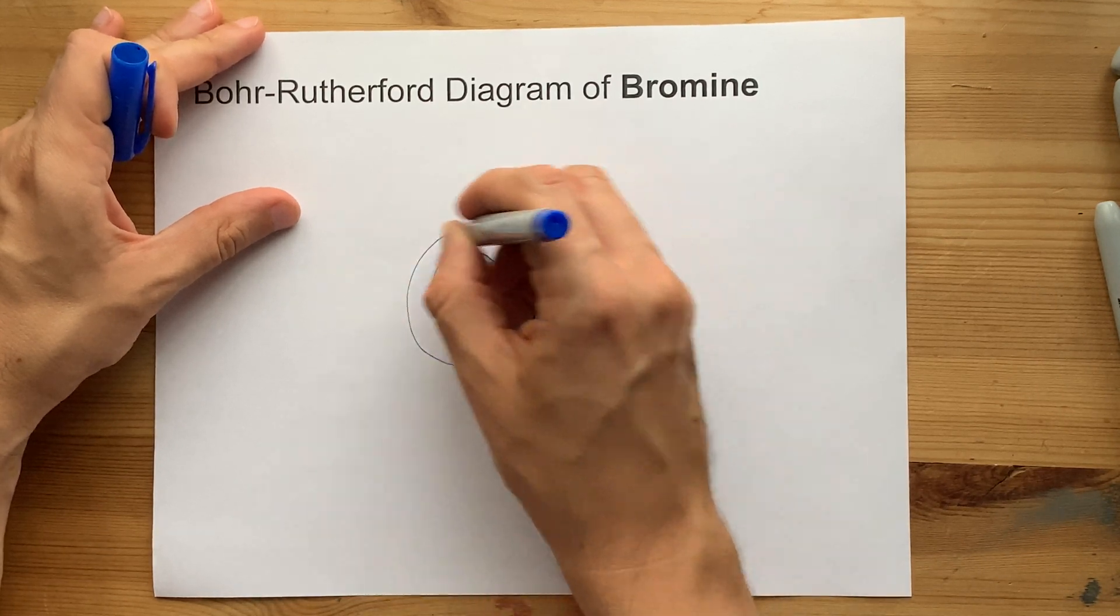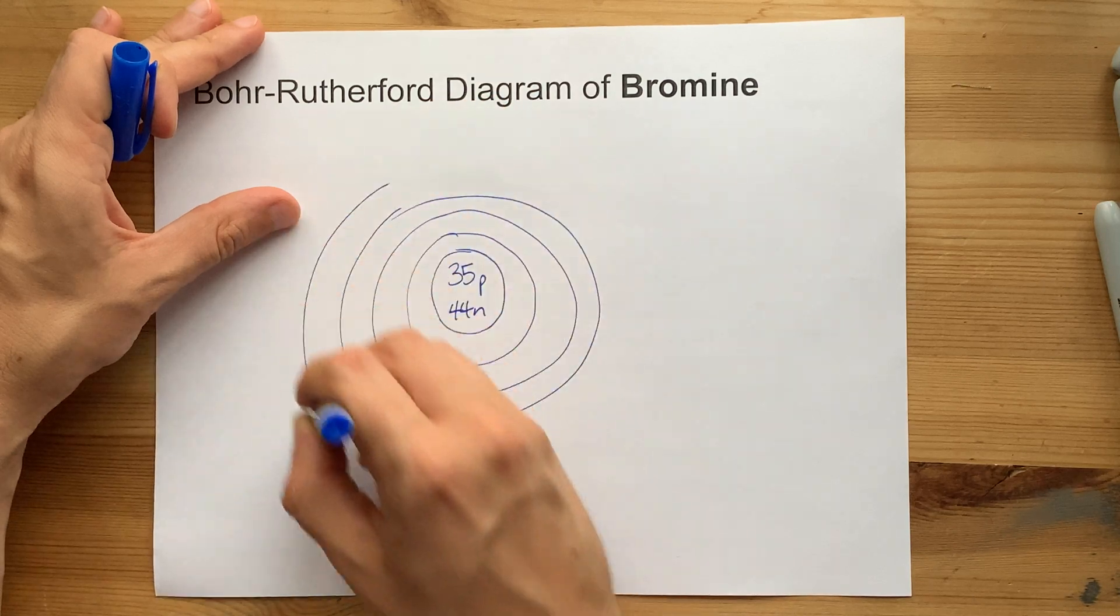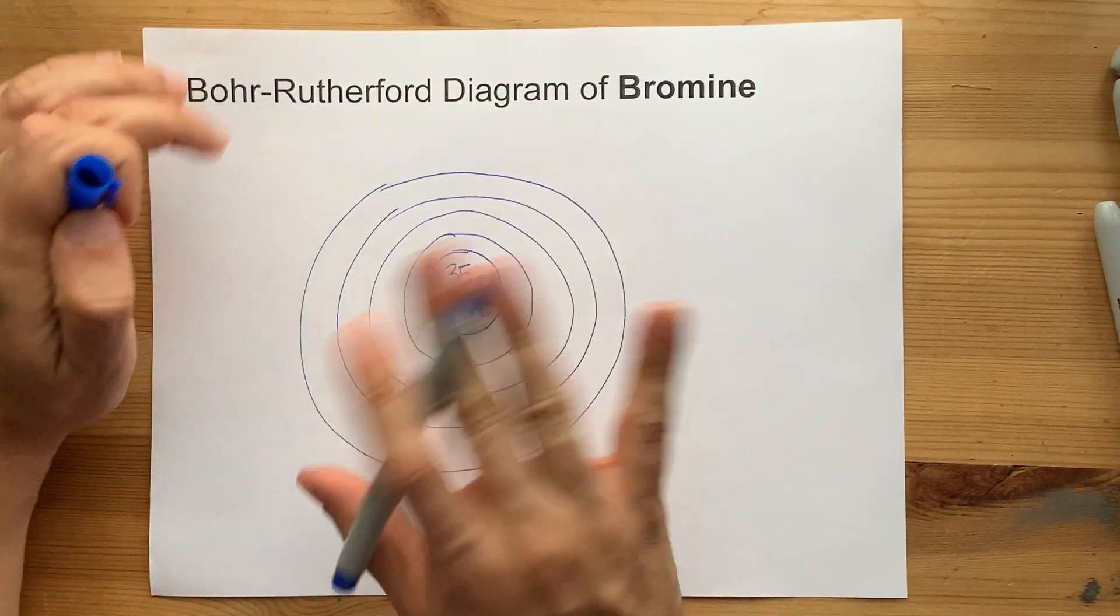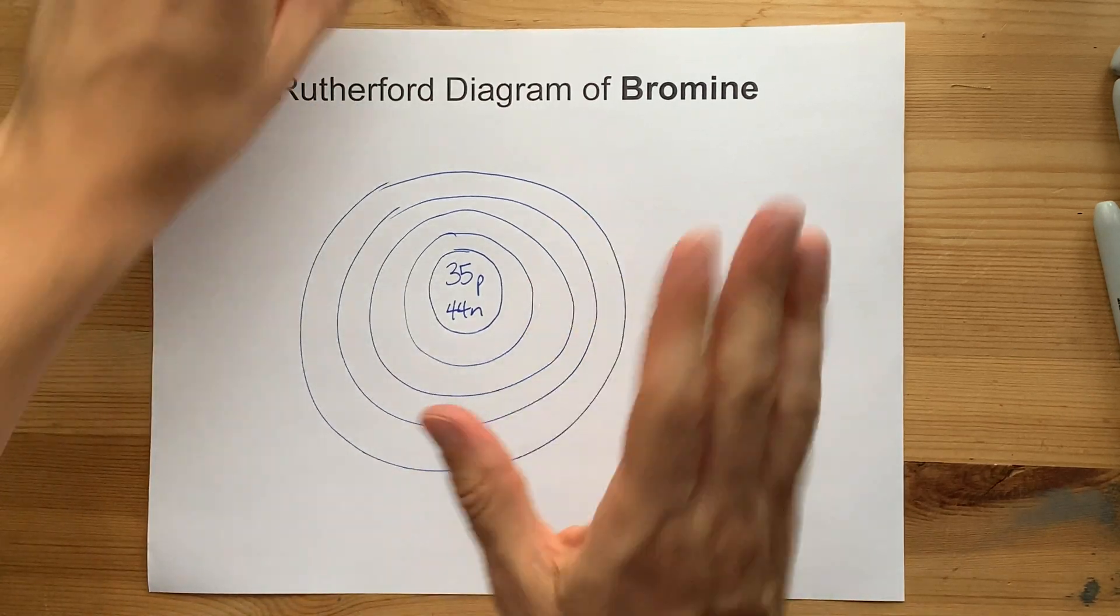So first shell, second shell, third shell, fourth shell. That's all I'm going to need here. But that's all I want you to draw at the beginning anyways. We'll add more if we need it.